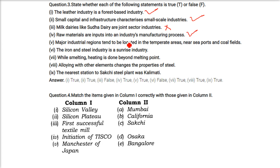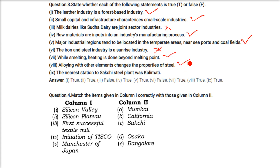Major industrial regions tend to be located in temperate areas near seaports and coalfields — this is absolutely true. The iron and steel industry is a sunrise industry — no; information technology, knowledge, and hospitality are sunrise industries. Smelting involves heating beyond melting point — true. Alloying with other elements changes the properties of steel — true; it increases hardness. The nearest station to Sakchi steel plant is Kalimati — also true.